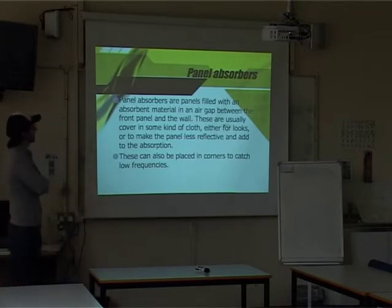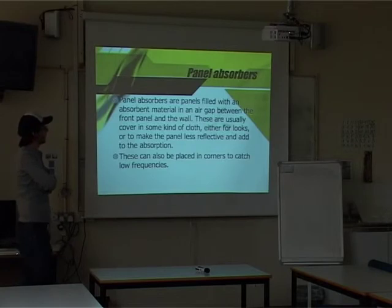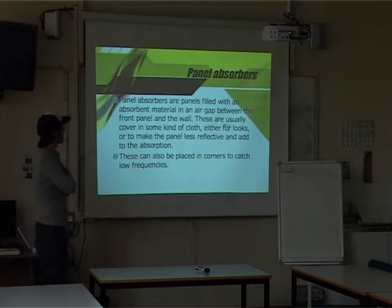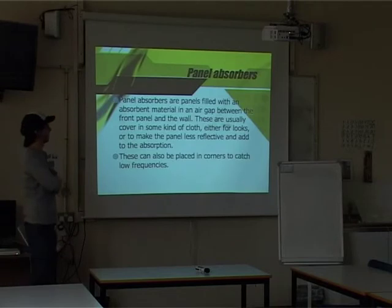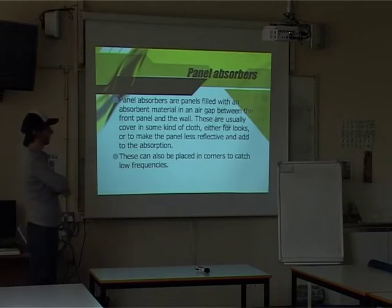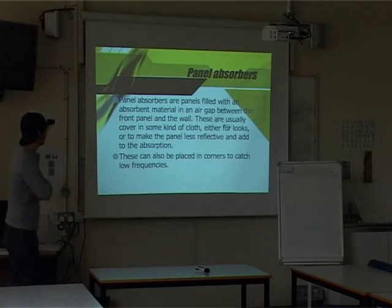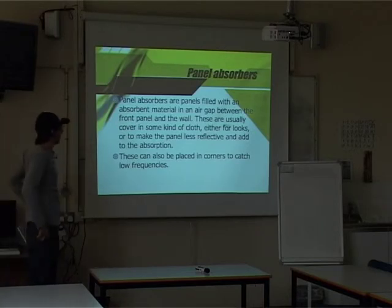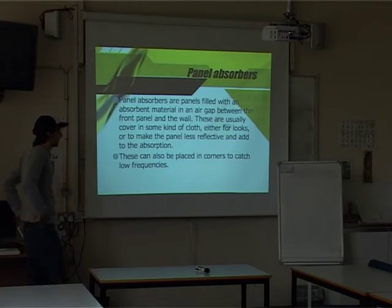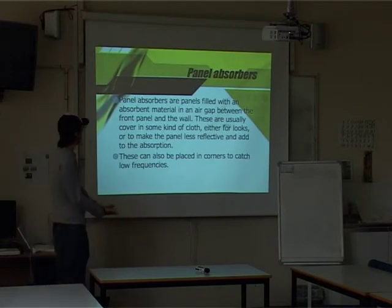Panel absorbers are panels filled with an absorbent material, with an air gap between the front panel and the wall. These are usually covered in some kind of cloth for aesthetic value, or just to make the panel less reflective and add to the absorption. These can be placed in corners to catch the low frequencies — the bass traps I was talking about.